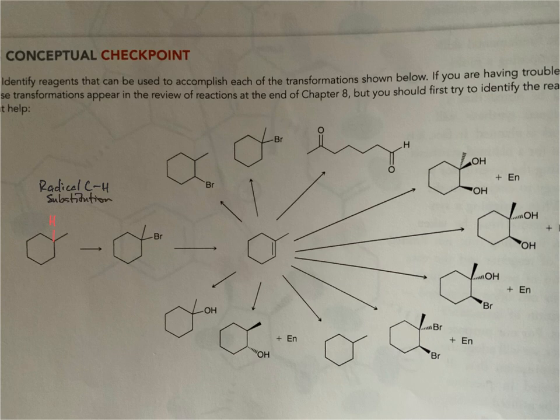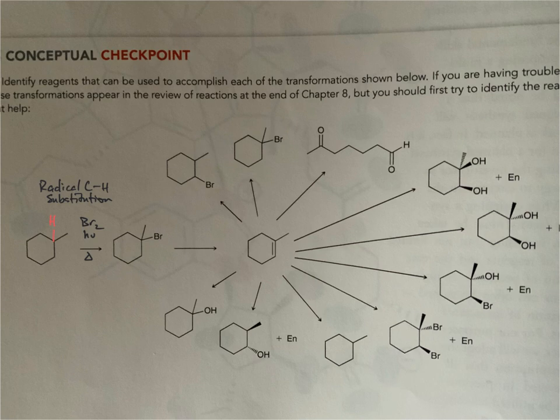The conditions: we obviously need bromine, and then we'll use either light or heat to initiate the radical chain mechanism. It's good practice when reviewing organic chemistry to write things down in words like this and then identify reaction conditions — there are a couple of different layers of learning here.